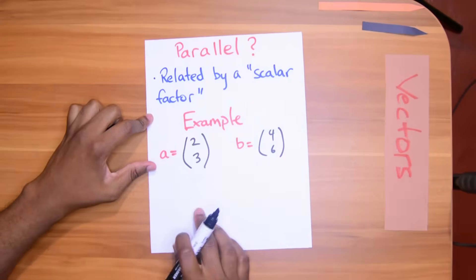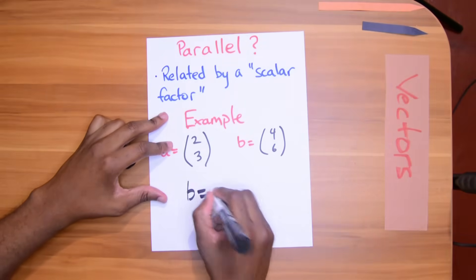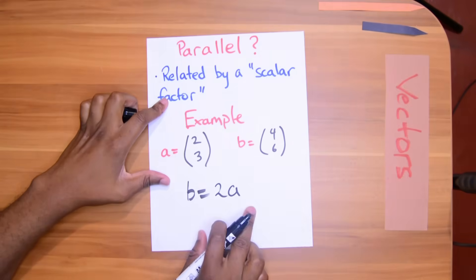Well, you simply show that B is equal to 2A. Can you see that? That's the scalar factor.